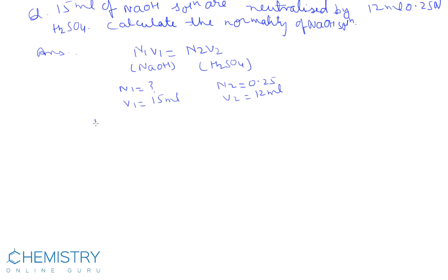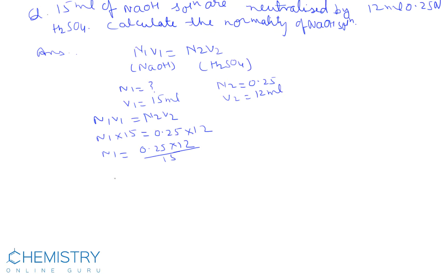Putting these values into the normality equation N1V1 equal to N2V2: N1 into 15 equals 0.25 into 12. So N1 equals 0.25 into 12 divided by 15. By solving, we get N1 equal to 1 upon 5. This means the normality of NaOH is 1/5. This is our answer.